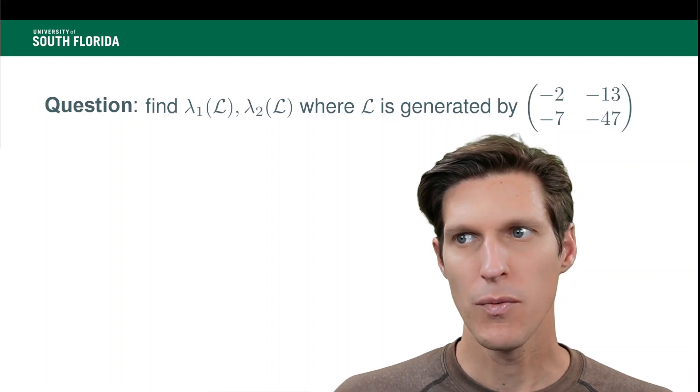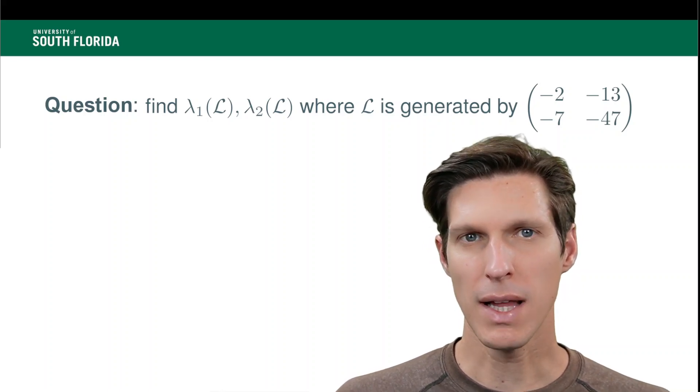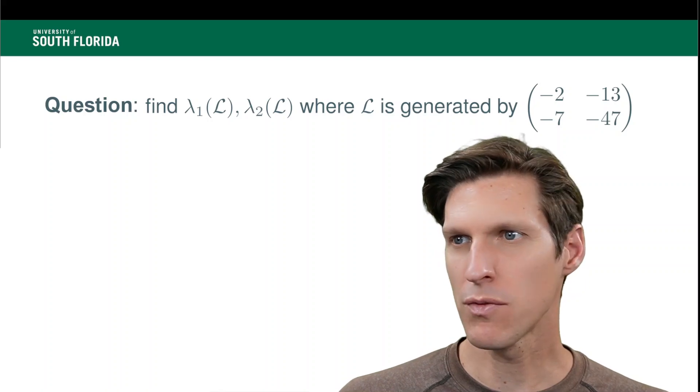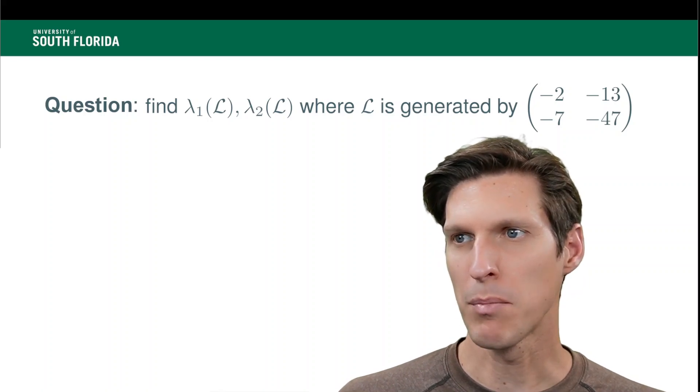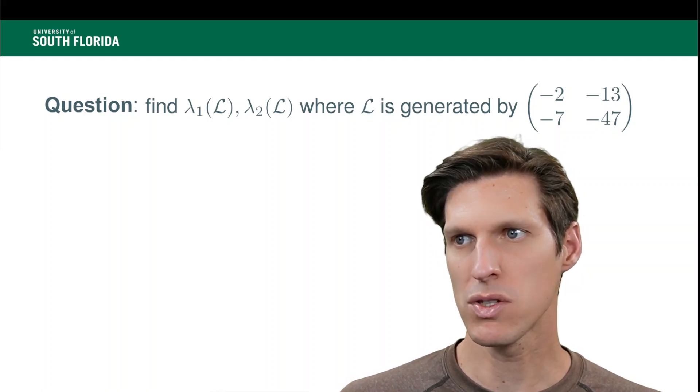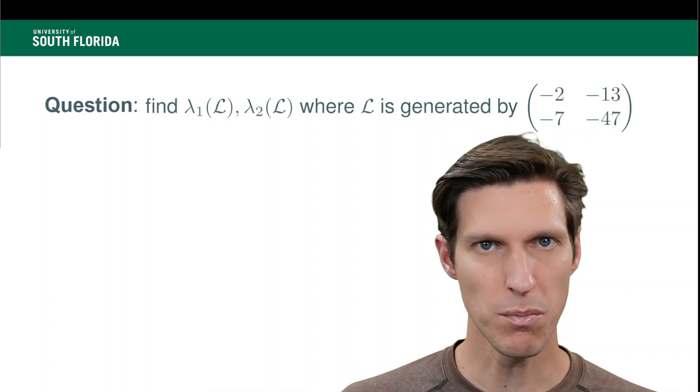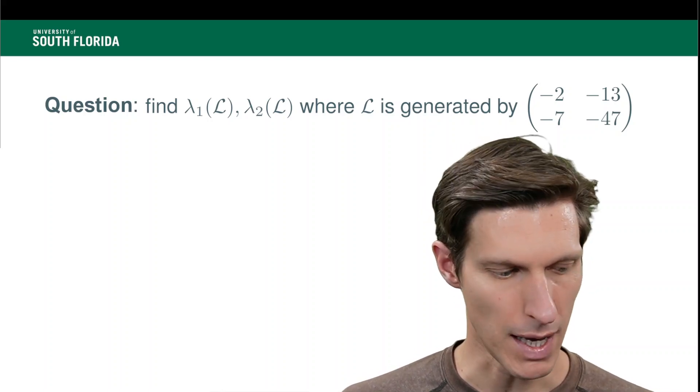So here, we're looking at the lattice that is generated by the columns of the matrix (-2, -7) and (-13, -47). Okay, so something so small that I will be able to do it by hand.